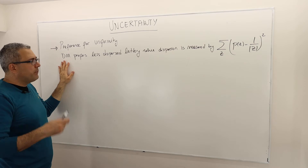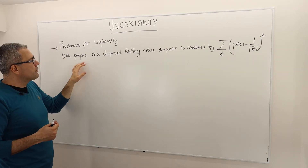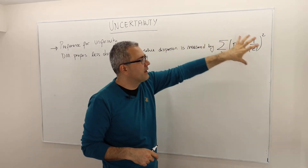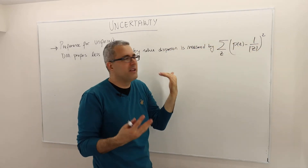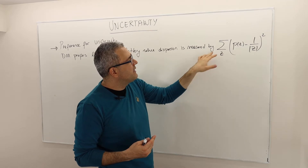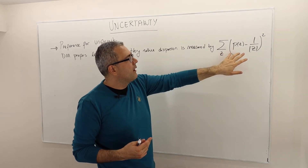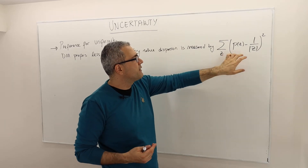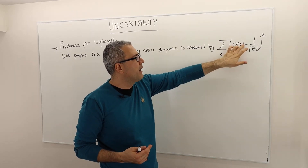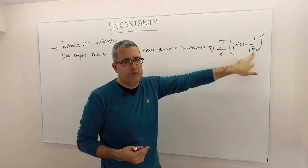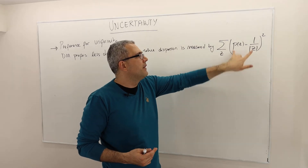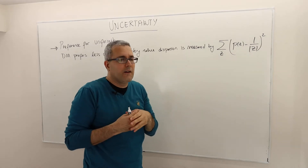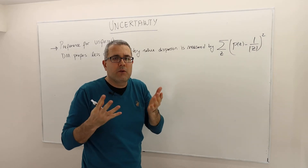The decision maker prefers a less dispersed lottery, where dispersion is measured by this mathematical formula. It's basically summing up a difference of terms, where the difference is the probability of an outcome minus one over the number of outcomes in set Z. Then we square them — so it's, in a sense, sort of the variance.